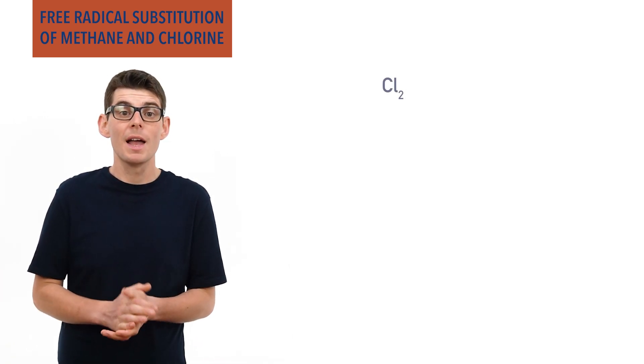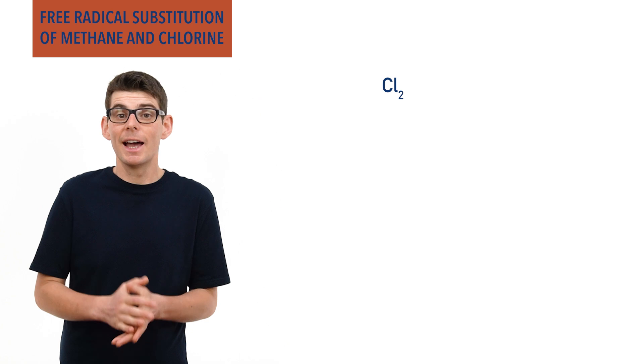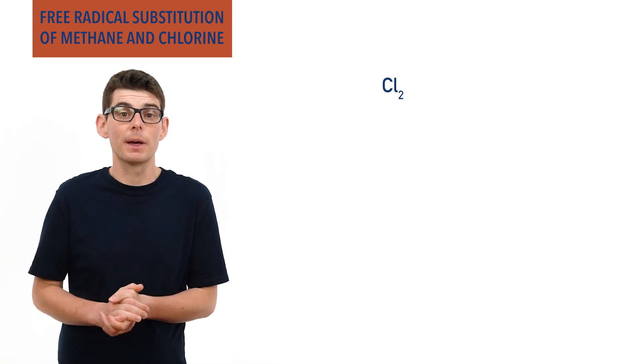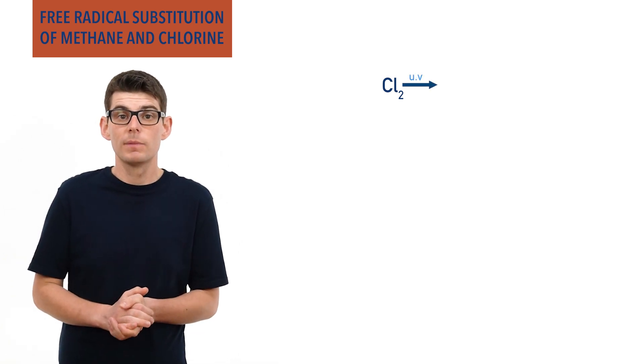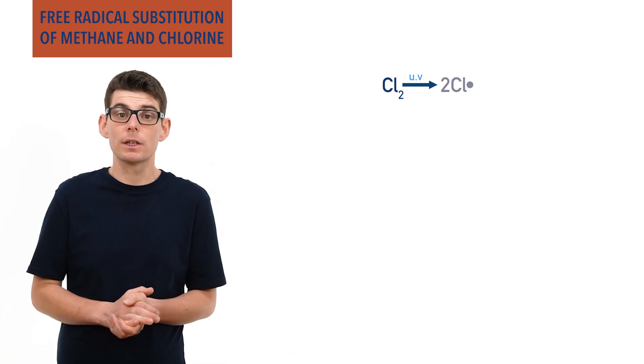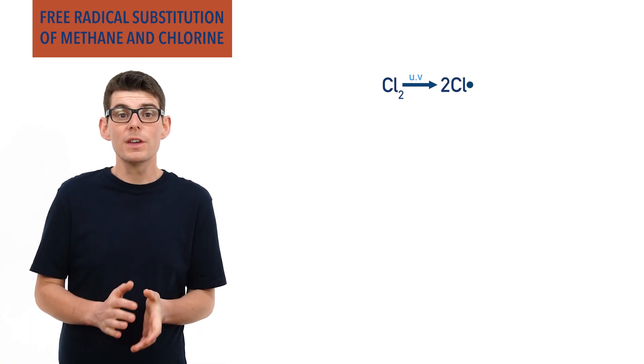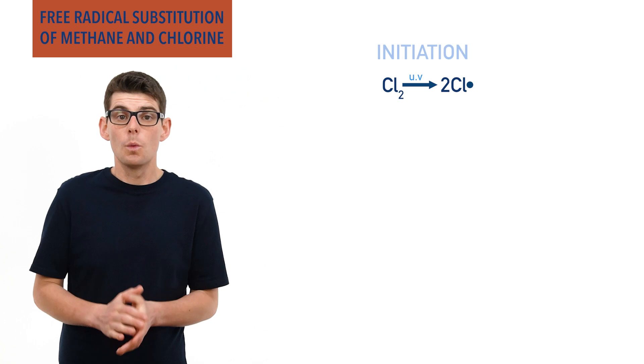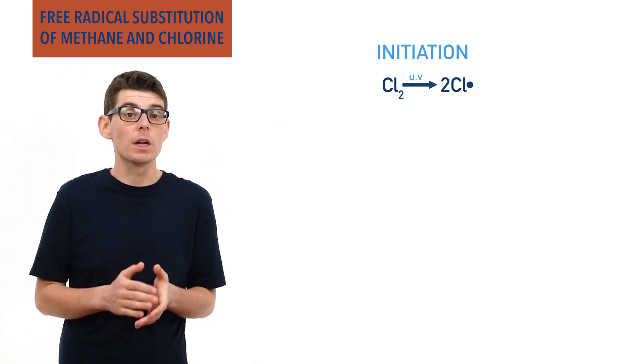the covalent bond in a chlorine molecule has to break homolytically and the energy needed is provided by ultraviolet light. Each chlorine atom gets an unpaired electron and two chlorine radicals are produced. This is the initiation step. We are creating radicals from a non-radical molecule.